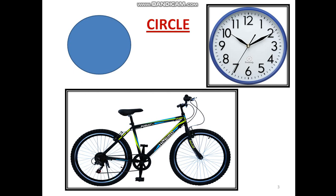First of all, our shape is circle. This is the circle. The circle is round. It has no vertices. It has no sides. It is gold.